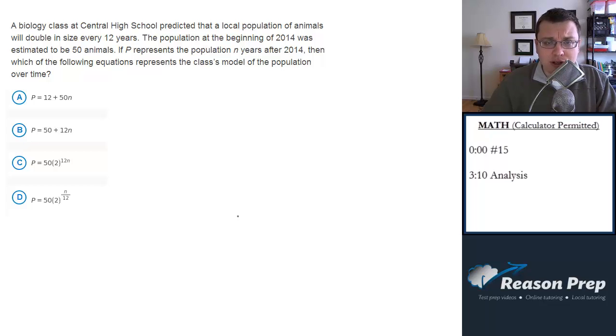A biology class at Central High School predicted that a local population of animals will double in size every 12 years. The population at the beginning of 2014 was estimated to be 50 animals. If P represents the population n years after 2014, then which of the following equations represents the class's model of the population over time?